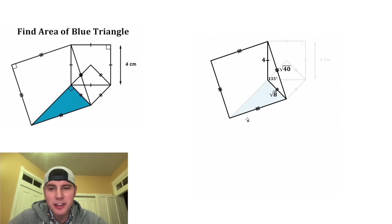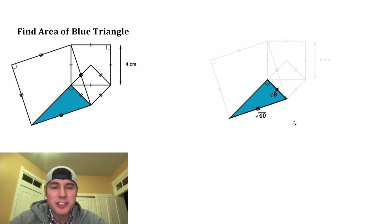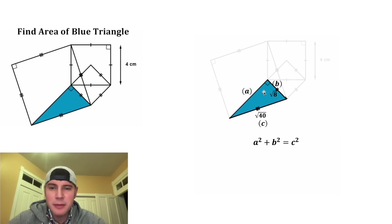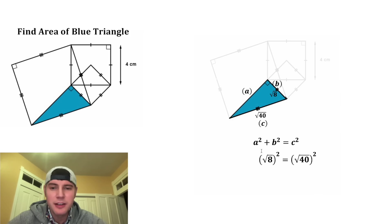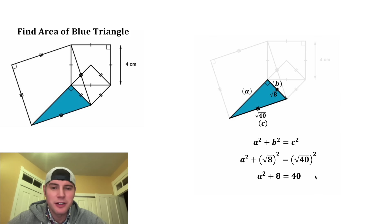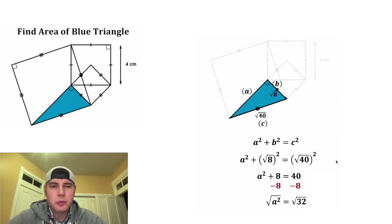Now let's focus on this square right here. Since this side is square root of 40, this side will also be square root of 40. Now we're ready to focus on this right triangle, and because it's a right triangle, we can do Pythagorean theorem. We'll assign a, b, and c to the sides. C is equal to square root of 40, and b is equal to square root of eight. Square root of 40 squared is 40, and square root of eight squared is eight. So we get a squared plus eight equals 40. Subtracting eight from both sides gives us a squared equals 32, and after square rooting both sides, a equals square root of 32.